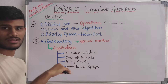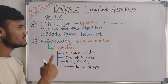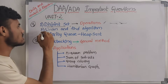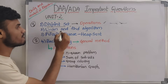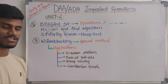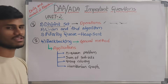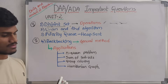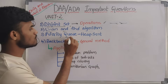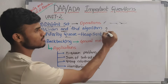First disjoint set — you can use the definition of operations. The second question is union and find algorithm. Union and find algorithm is the most important question. Maximum you have five marks. Priority key is union and find algorithm — these are very very important questions.